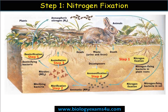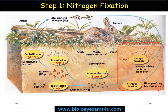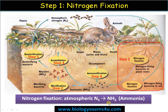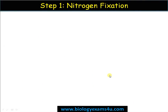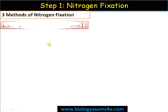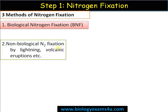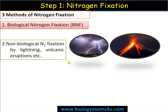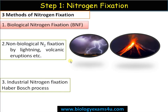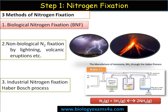Step one: nitrogen fixation. Nitrogen fixation is the conversion of atmospheric N2 to NH3 or ammonia. Nitrogen fixation can happen by three methods. The first is biological nitrogen fixation, the most important method, which we will discuss in detail. The second is non-biological nitrogen fixation, by lightning, volcanic eruptions, etc. The third is industrial nitrogen fixation — the Haber-Bosch process used in making fertilizers, requiring approximately 500°C and 200 atmospheres pressure in the presence of an iron catalyst.